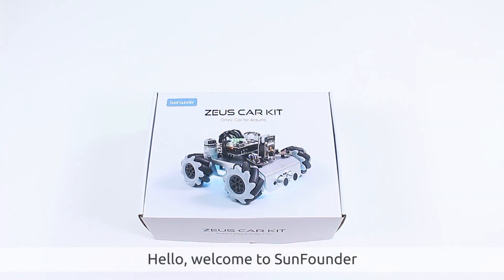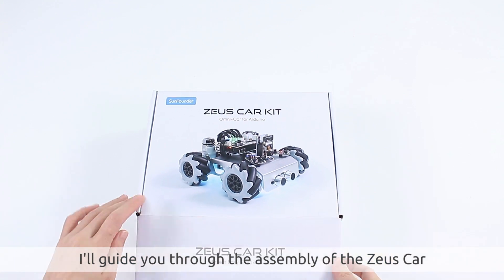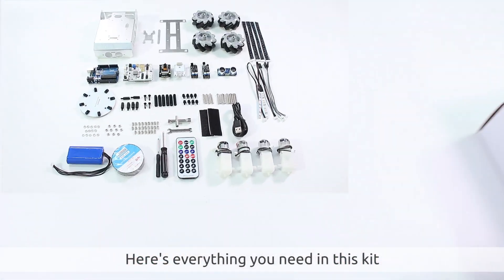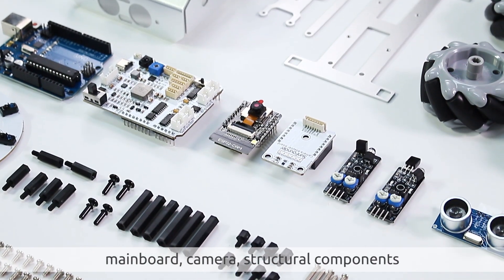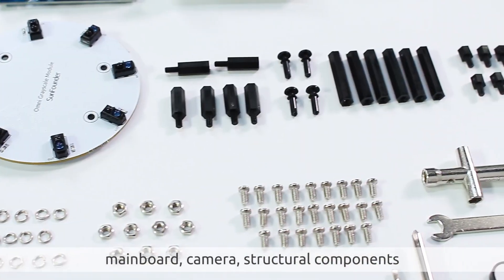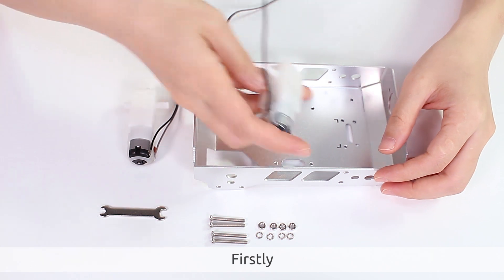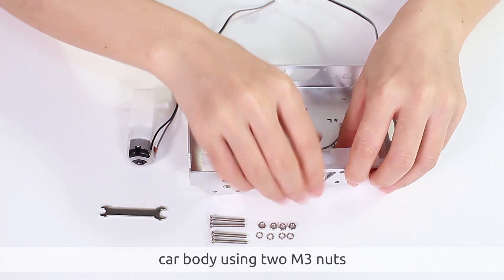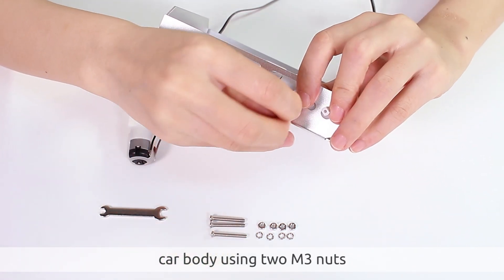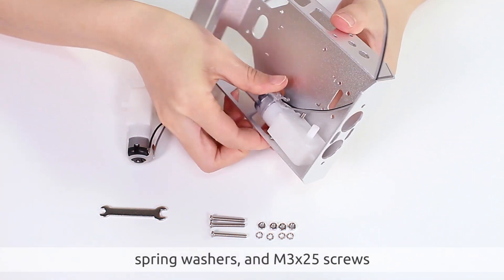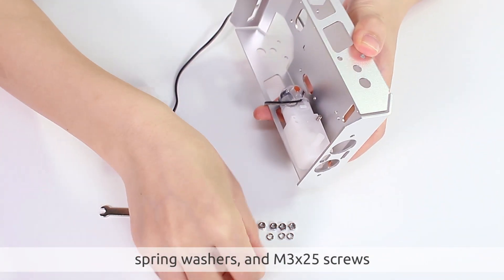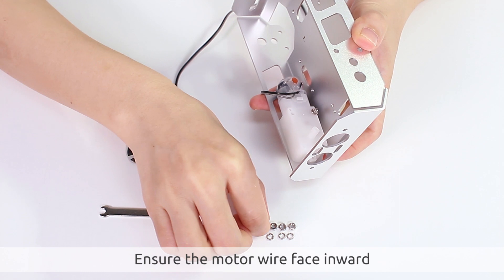Hello, welcome to Sunfounder. Today I'll guide you through the assembly of the Zeus car. Here's everything you need in this kit: mainboard, camera, structural components, and other accessories. Firstly, install a motor into the car body using two M3 nuts, spring washers, and M3 by 25 screws. Ensure the motor wire faces inward.